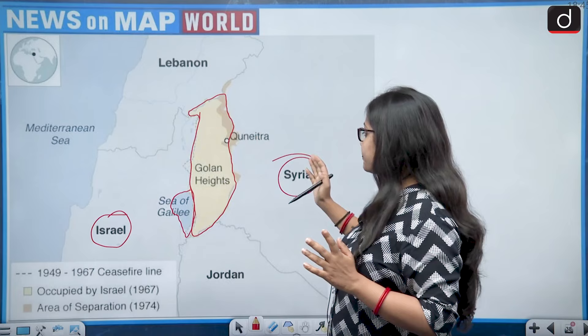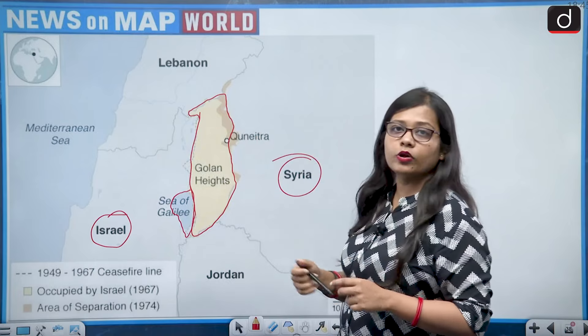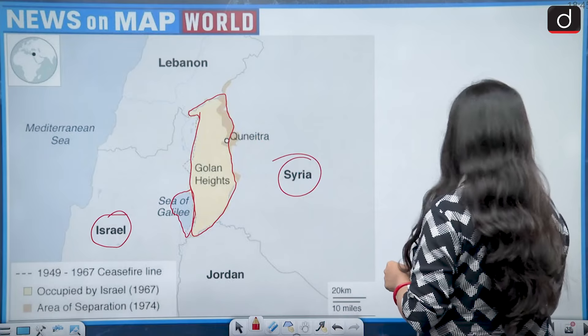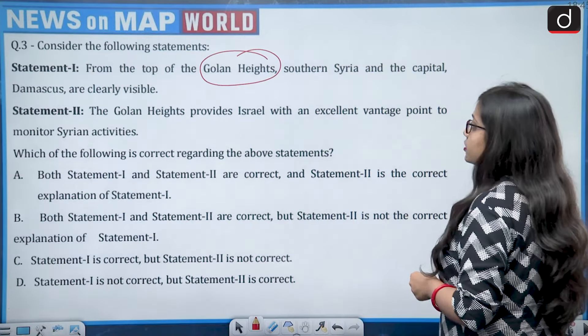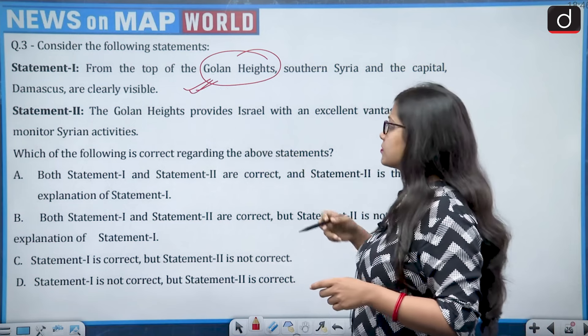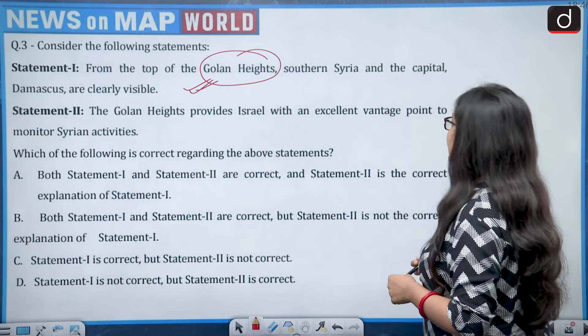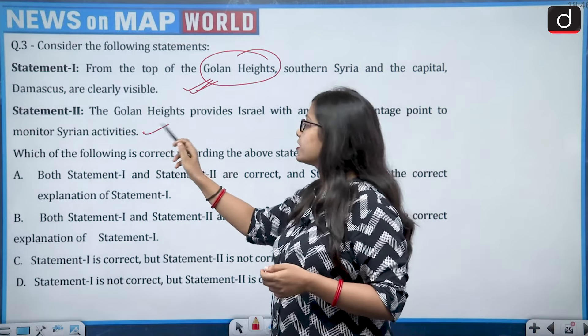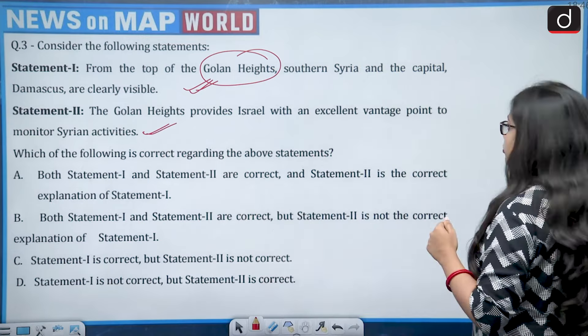From the Golan Heights, Israel can clearly keep watch on Syria, and the capital Damascus is also visible from the Golan Heights — so statement one is true. The Golan Heights also provides Israel with an excellent vantage point to monitor Syrian activities — that is also correct because of its location. Both statements are correct.